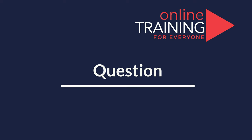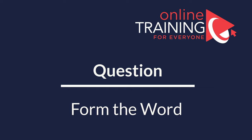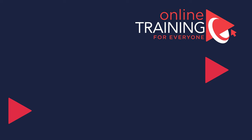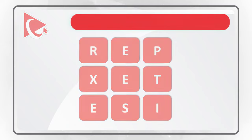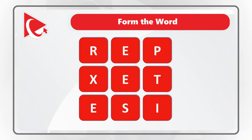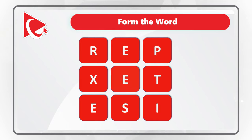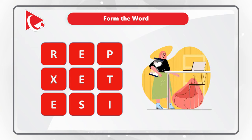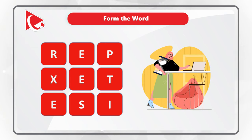Very frequently you might get tested on how quickly you can form words using letters of the English alphabet. In our case, you're presented with nine letters, and you need to form a word using all the letters only once. The letters are R, E, P, X, E, T, E, S, I. Do you see the word? Give yourself maybe 10 to 15 seconds to see if you can answer the question.